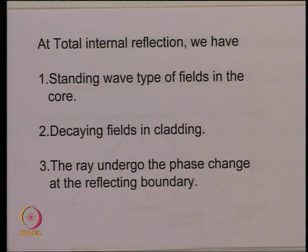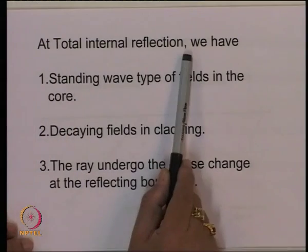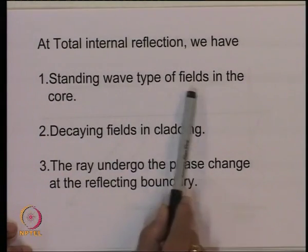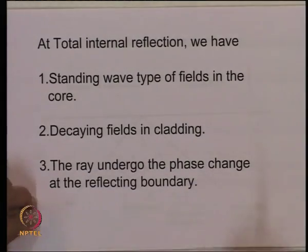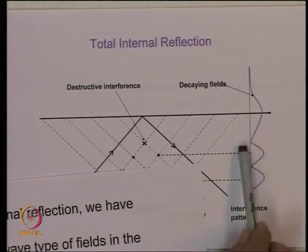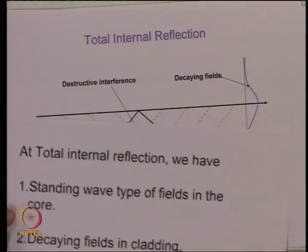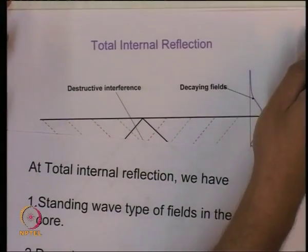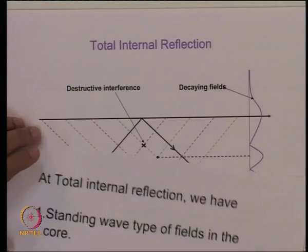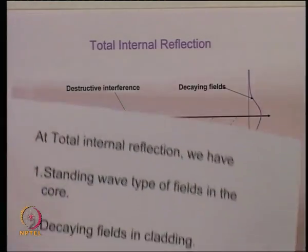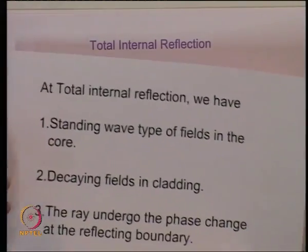As soon as we put wavefronts behind the rays, something interesting emerges about light propagation. To summarize: at total internal reflection, there is a standing wave type of field inside the core, and decaying (evanescent) fields inside the cladding. This physical understanding is required when we go to the more rigorous wave model analysis.